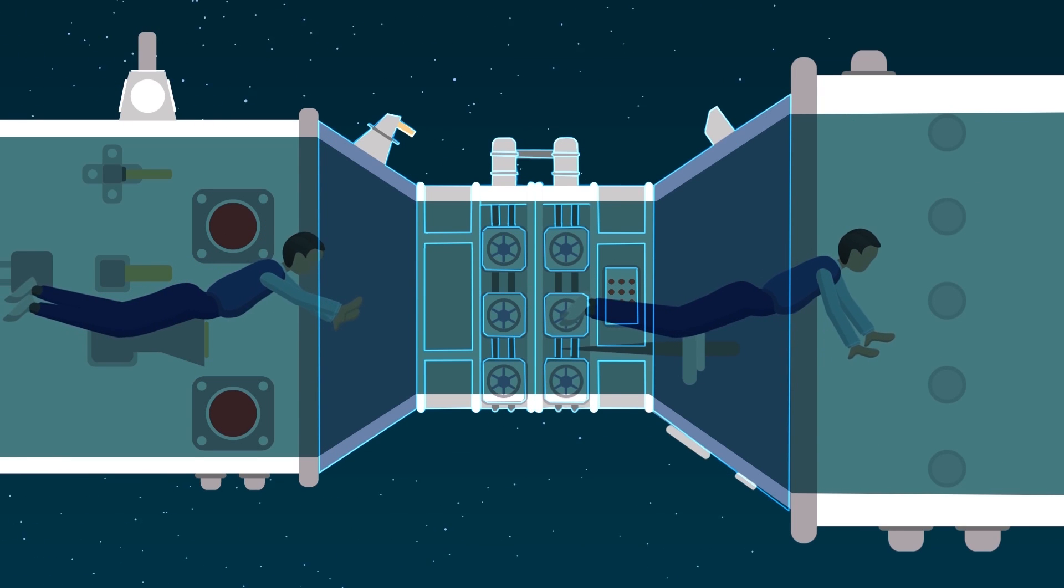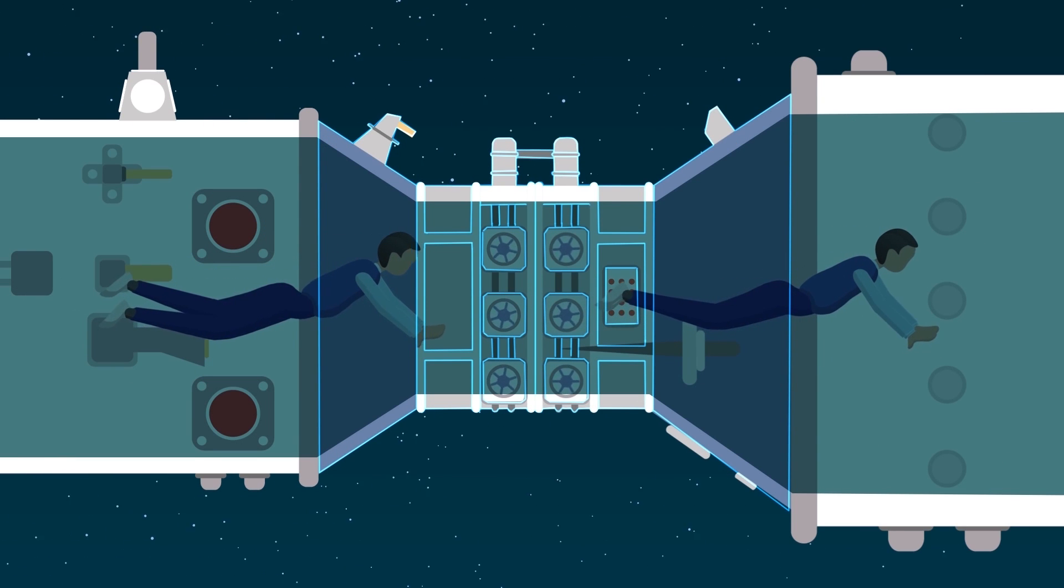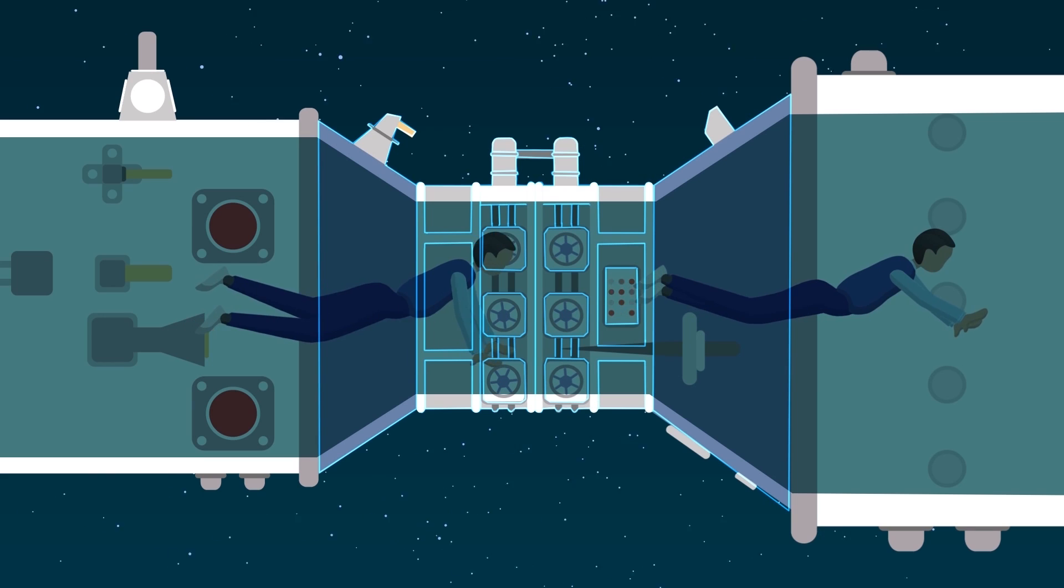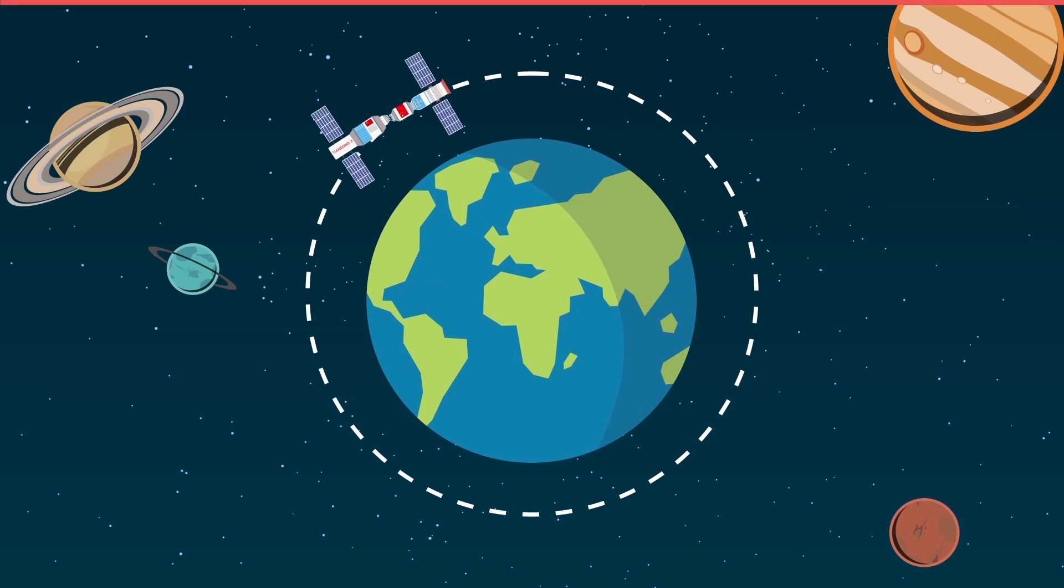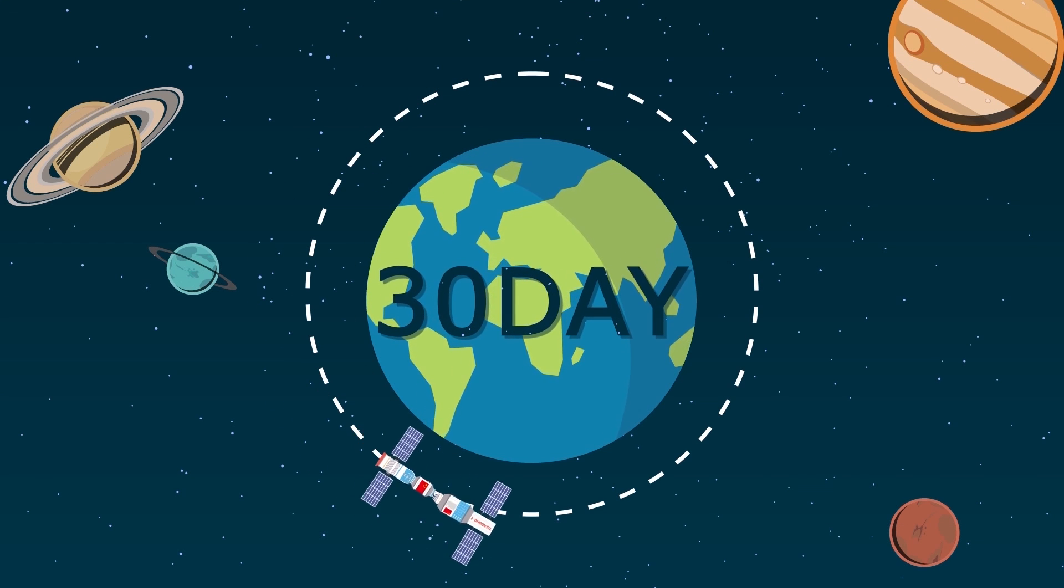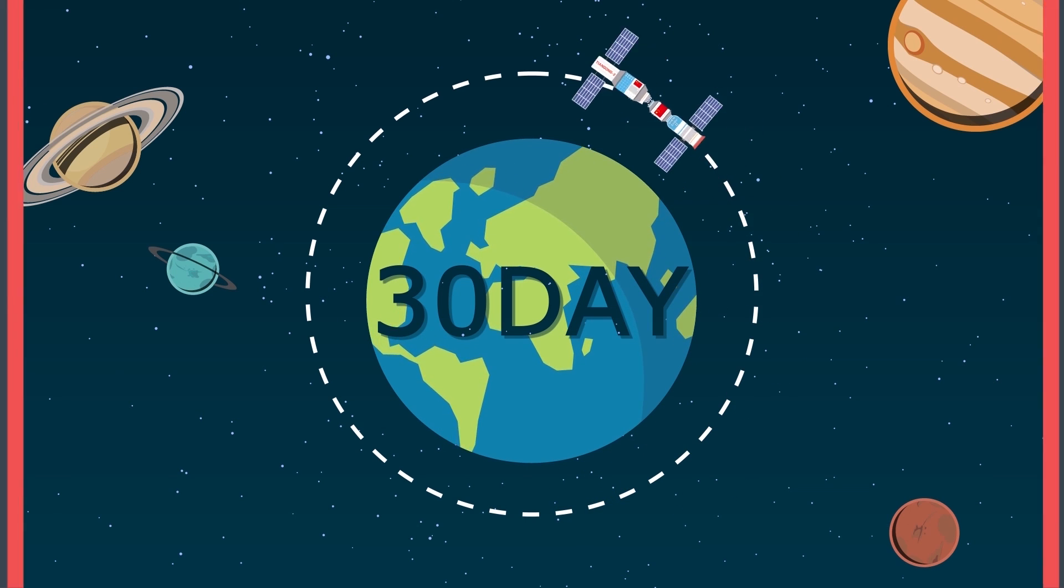If all goes well, the two astronauts are to enter the Tiangong-2 through a passage that connects the space lab to the spacecraft. They will stay in the lab for 30 days, while the Shenzhou-11 spacecraft will remain docked.